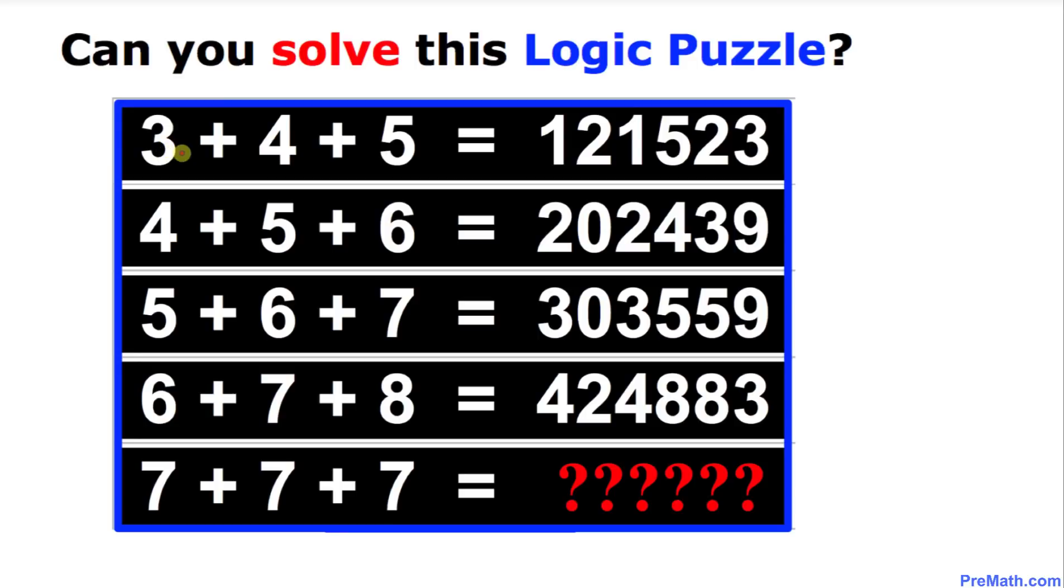So the question is 3 plus 4 plus 5 equals this 6-digit answer. Likewise, when we add 4 plus 5 plus 6, we get this number again, 6 digits. And then 5 plus 6 plus 7 equals once again a 6-digit number, as you can see.